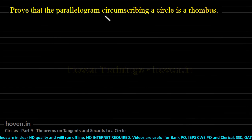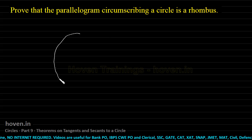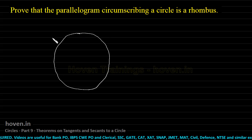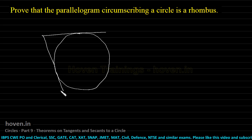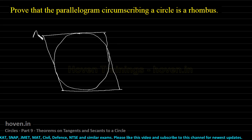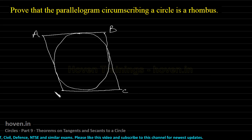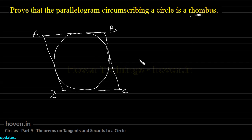Prove that the parallelogram circumscribing a circle is a rhombus. Let me draw a diagram first. This is a circle, and ABCD is a parallelogram circumscribing it, with center O. AB is parallel to CD. Since ABCD is a parallelogram, angle A equals angle C, because opposite angles of a parallelogram are equal.